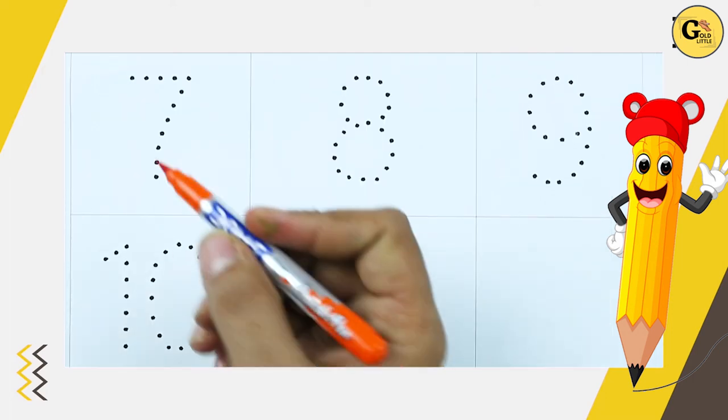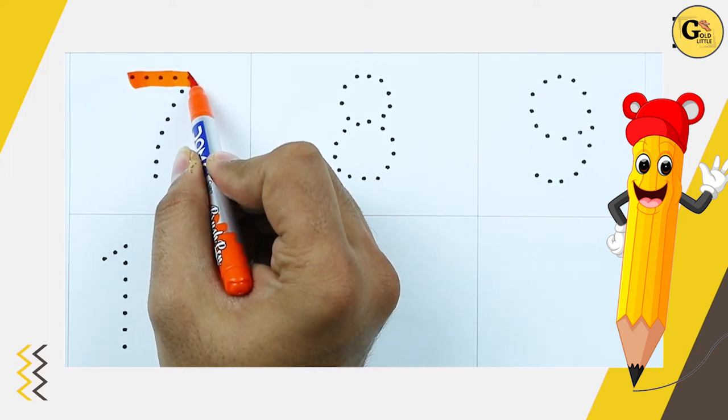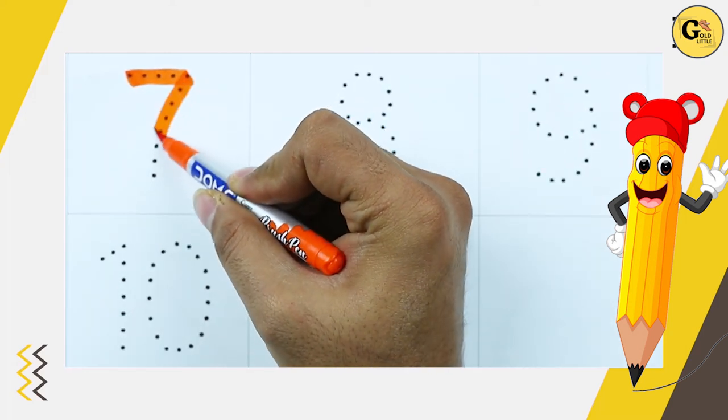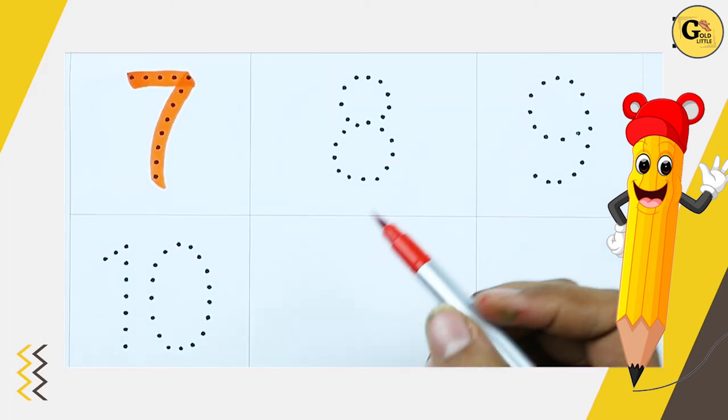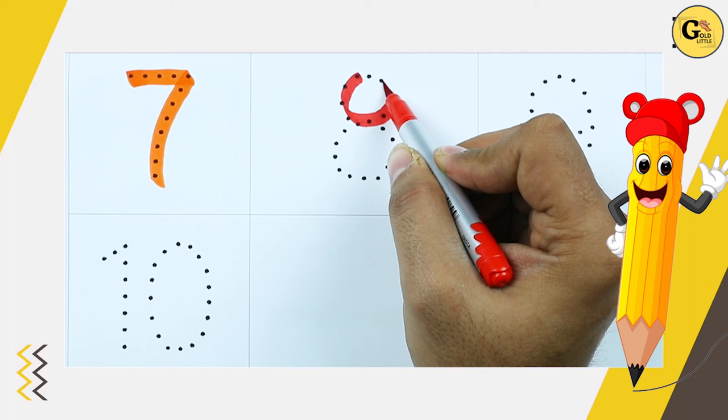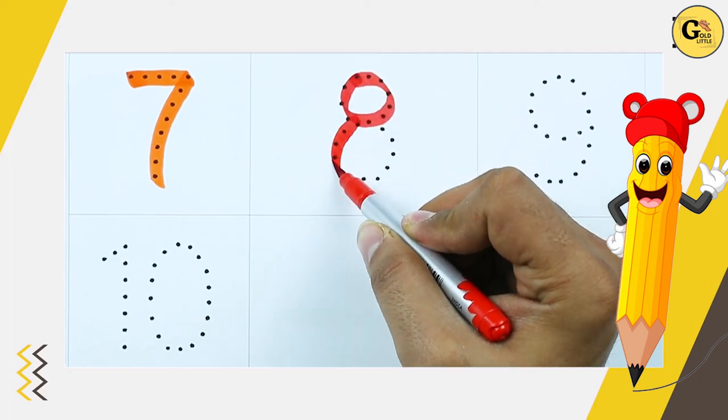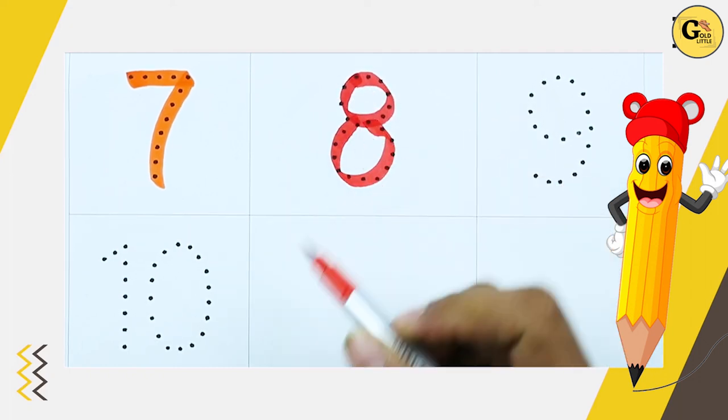Number 7 with orange color. It's number 7. Number 8. Number 8 with red color. It's number 8.